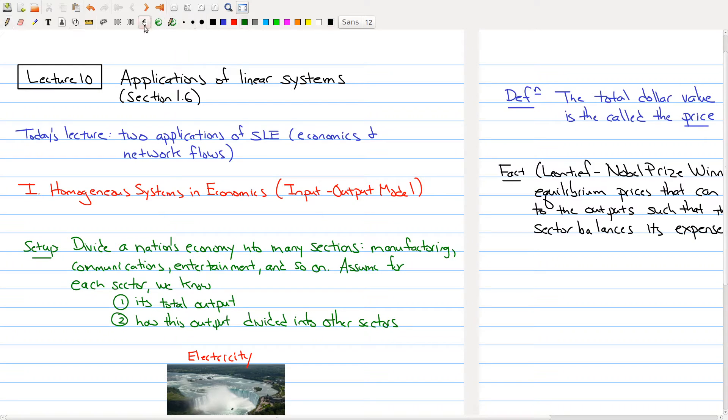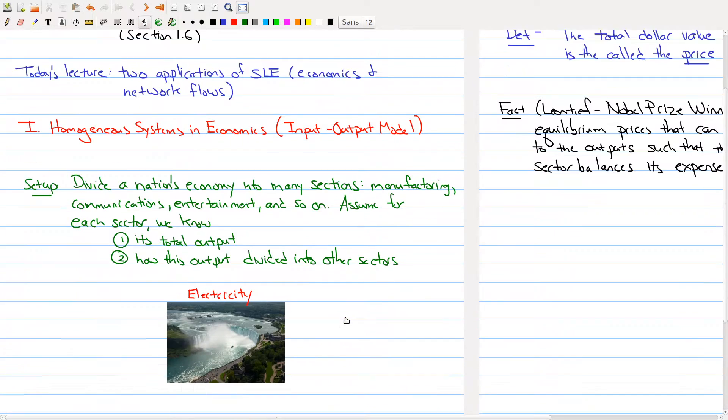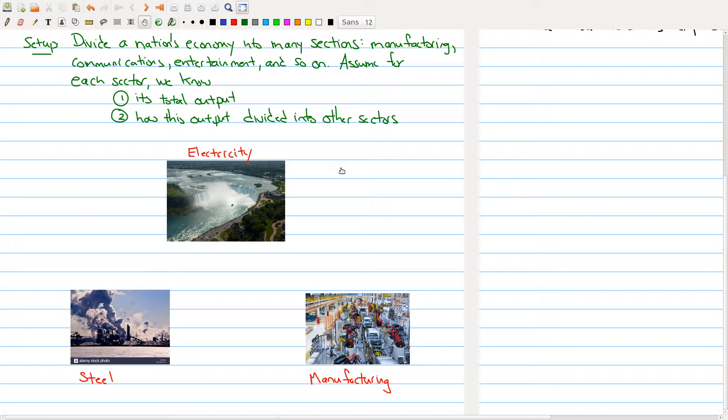Here I have an example that we'll use for the first half of the talk. Let's say our three sectors are electricity, so we have Niagara Falls generating all of our electricity. We have some robots here in an auto plant denoting manufacturing. And here's a picture of Hamilton denoting the steel industry. So we have these three industries.